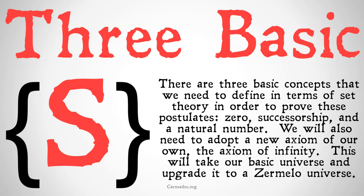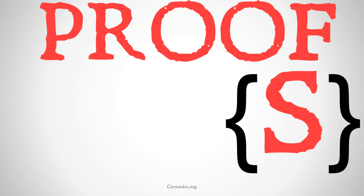It's important to note that zero, successorship, and natural numbers can be defined in any number of ways, and they can be left undefined. We're going to be picking specific definitions that allow us to build arithmetic on top of set theory. But you could build arithmetic on top of other things, as long as you have enough underlying axioms and definitions to define zero, successorship, natural numbers, and to prove those five Peano postulates.